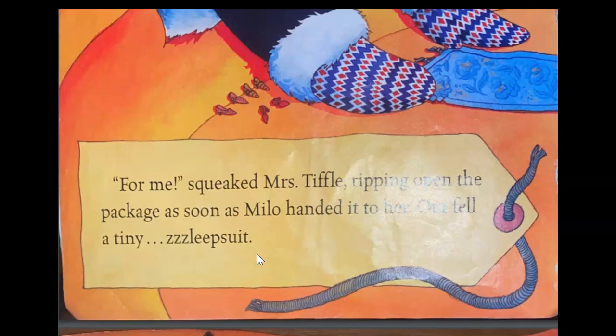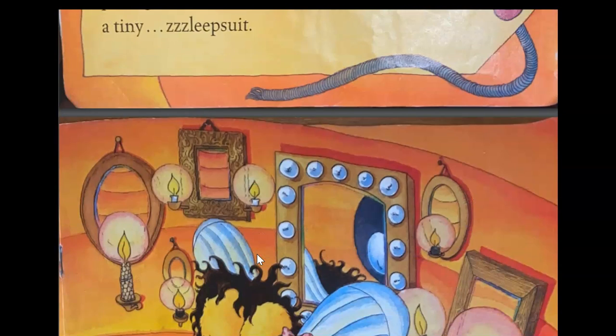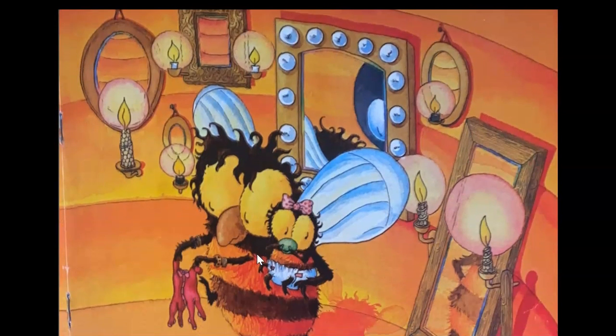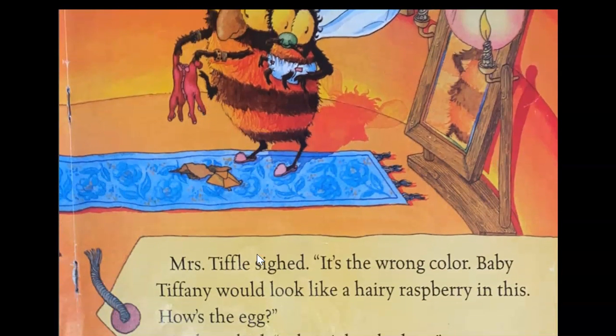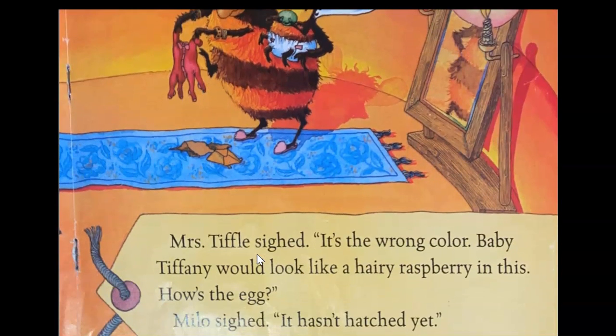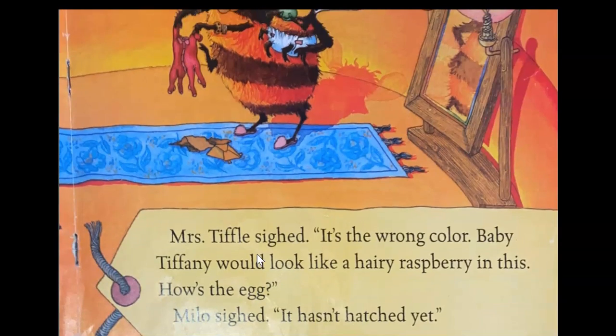For me, squeaked Miss Trifle, ripping open the package as soon as Milo handed it to her. Out fell a tiny sleep suit. Mrs. Trifle sighed. It's the wrong color. Baby Tiffany would look like a hairy raspberry in this. How's the egg? Milo sighed. He hasn't hatched yet.